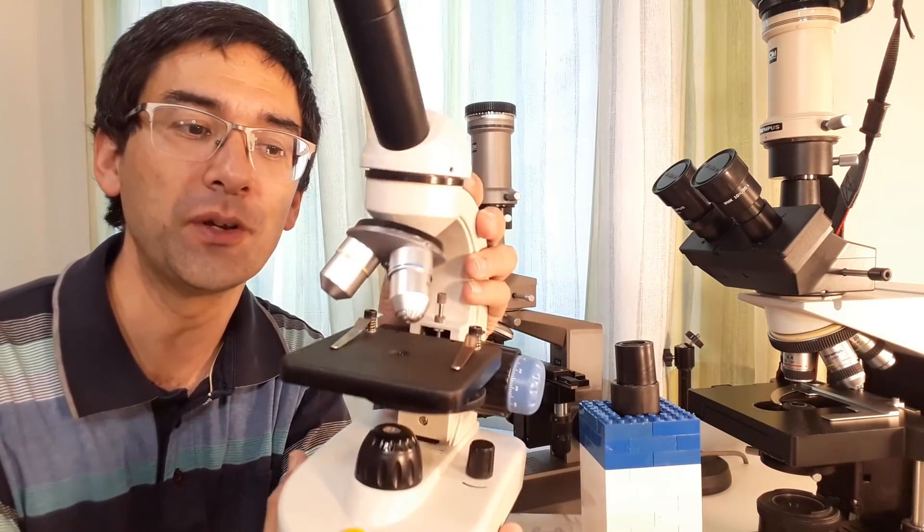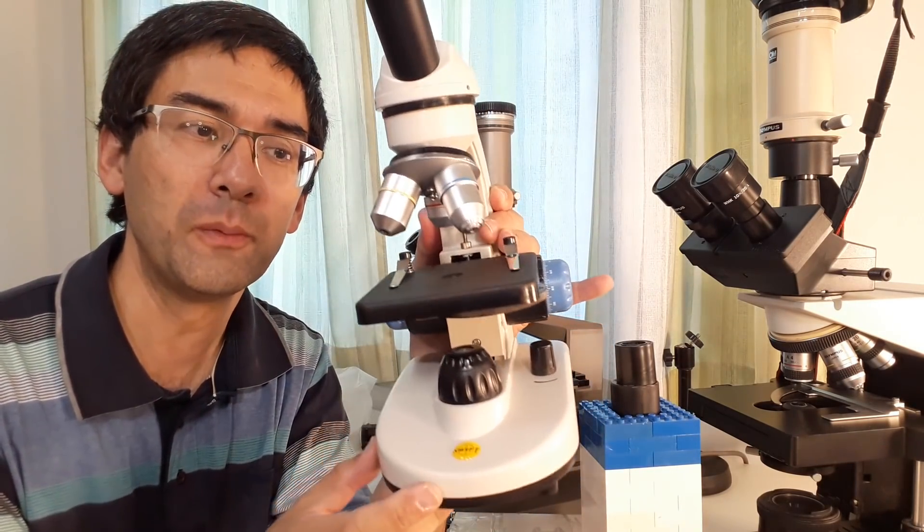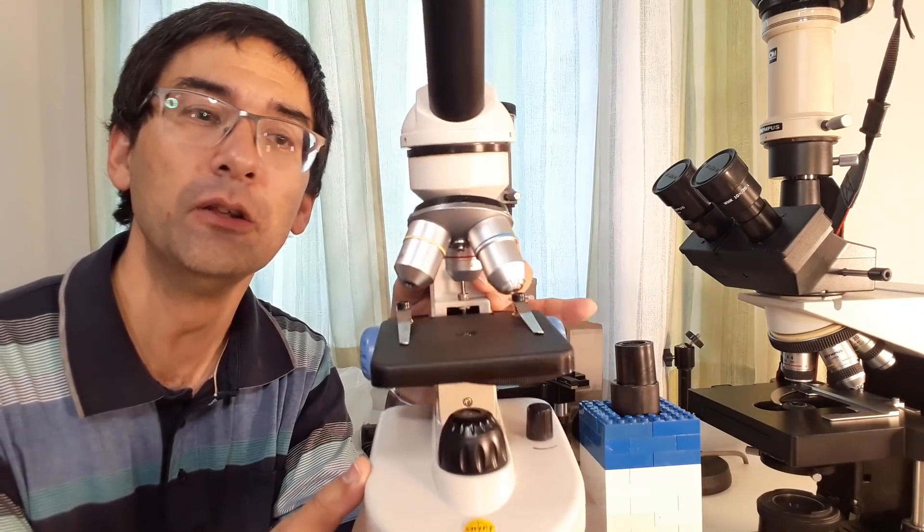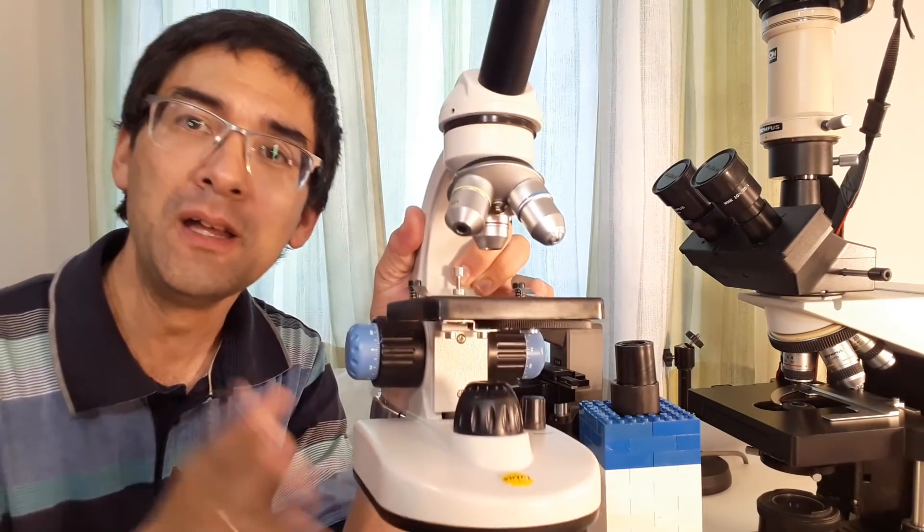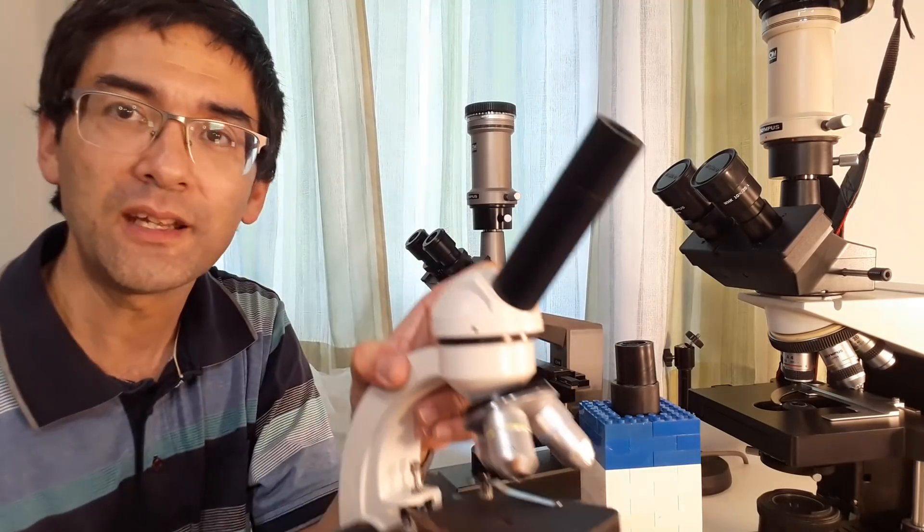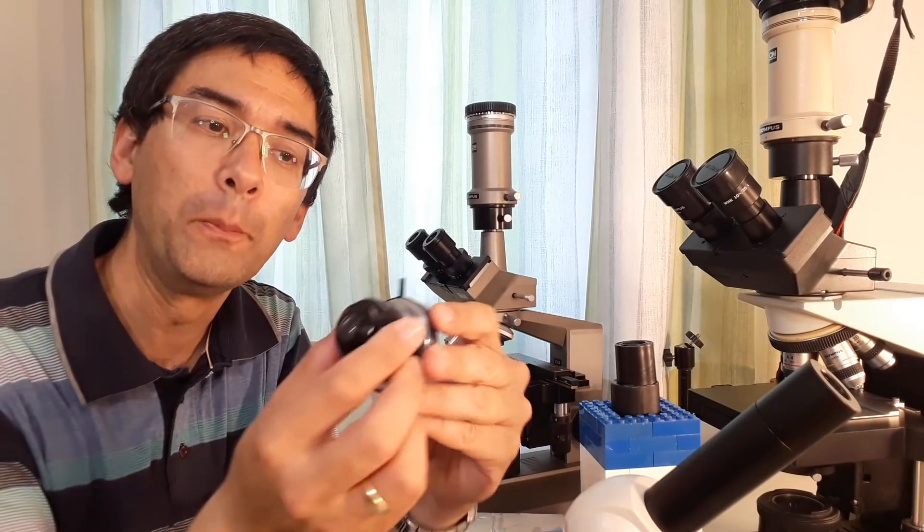So what I have here is, for example, a new microscope from Swift. And this is a very low cost, but very good microscope. I'll be reviewing this one. In the second YouTube channel, I'll also be talking about microscope optics. So for example, this here is a condenser. I'll be explaining the parts of the microscopes.